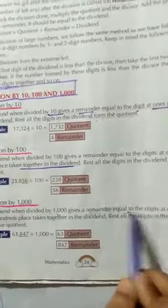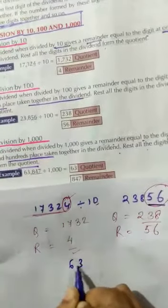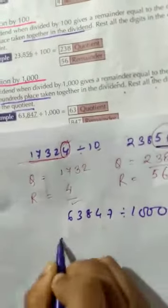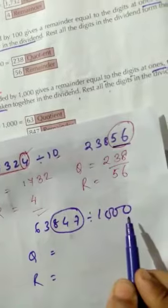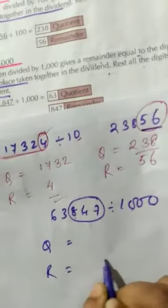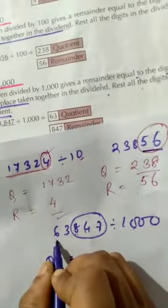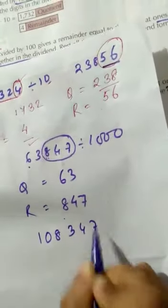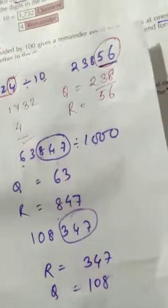Division by 1000: when divided by 1000, the remainder equals the digits at the ones, tens, and hundreds places — three digits taken together from the right. For example, 63847 divided by 1000 gives remainder 847 and quotient 63. Similarly, 108347 divided by 1000 gives remainder 347 and quotient 108. The number of zeros in the divisor tells you how many digits to take from the right as the remainder.